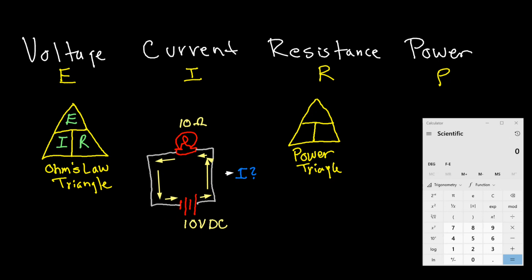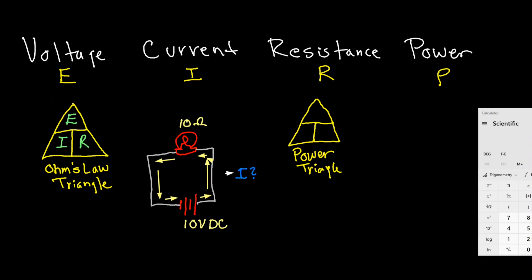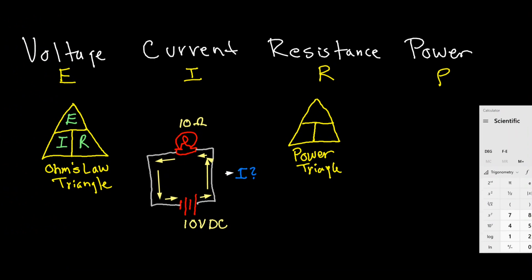So that would be 10 volts divided by 10 ohms, which is equal to 1. So our current in this case is 1 amp.